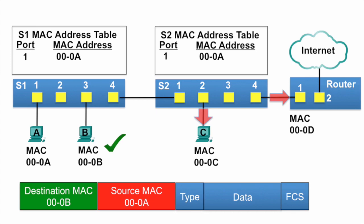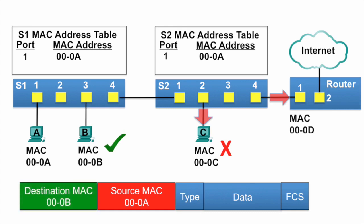PCC receives the Ethernet frame, but its MAC address does not match the destination MAC address of the Ethernet frame, so it does not accept the rest of the frame. The router also receives the Ethernet frame, examines the destination MAC address against its own MAC address, notices it is not a match, and does not receive the rest of the frame.